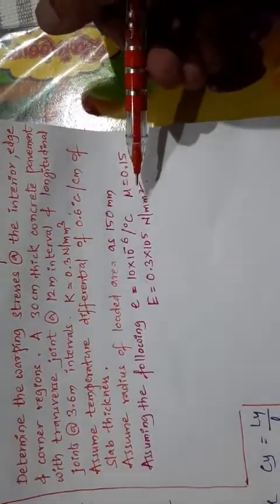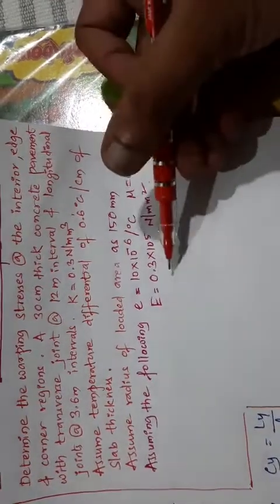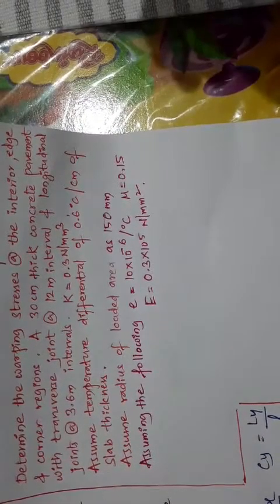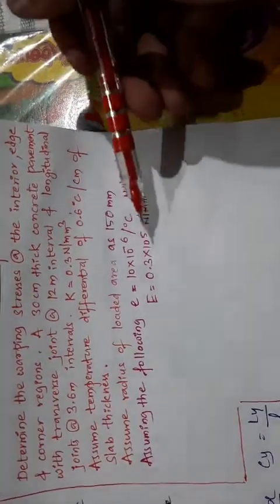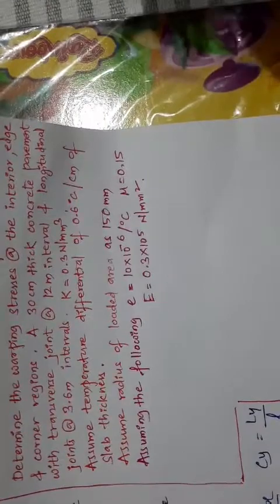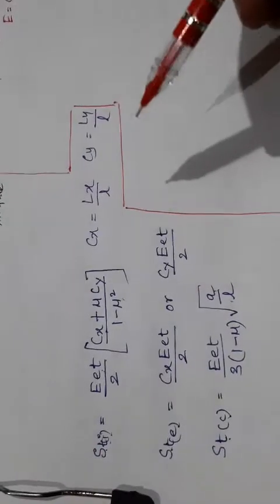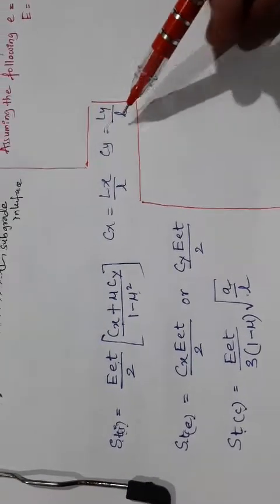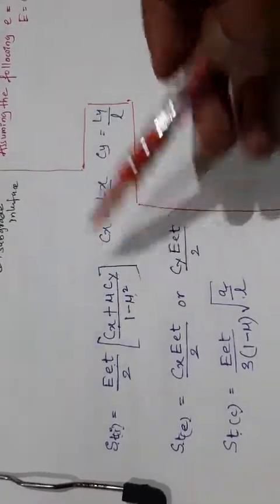Poisson's ratio is 0.15 and modulus of elasticity of concrete is given as 0.3 into 10 raised to 5 Newton per millimeter square. As you have seen in the problem, we require Lx and Ly to calculate Cx and Cy. You will also require L, the radius of relative stiffness.